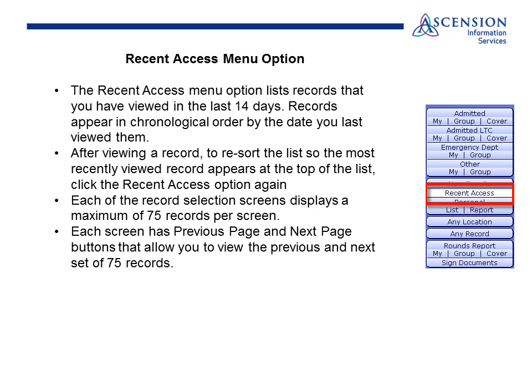Recent menu option: the Recent menu option lists records that you have viewed in the last 14 days. Records appear in chronological order by the date you last viewed them. After viewing a record, to re-sort the list so the most recently viewed record appears at the top, click the Recent Access option again. Each of the record selection screens displays a maximum of 75 records per screen. Each screen has Previous Page and Next Page buttons that allow you to view the previous and next set of 75 records if you have viewed that many.